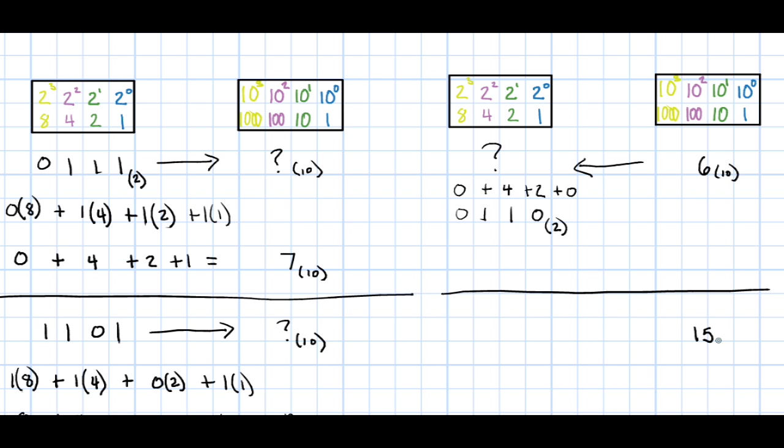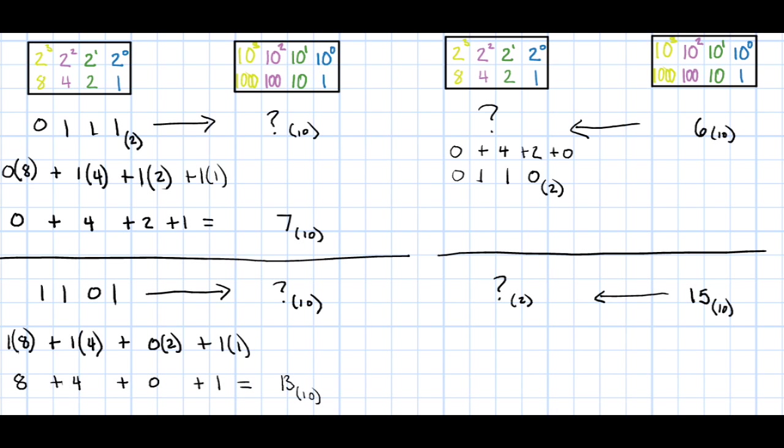To finish off this tutorial, we are going to take the decimal number 15 and convert it to binary. The process is the same. We need to figure out which binary digits we will need to construct the number 15. Since 15 is greater than 1, we know we'll need the 1's place. 15 is greater than 2, 4, and 8, so we'll need those places as well.